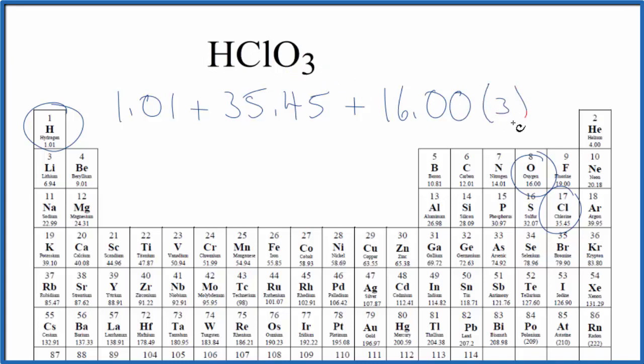So we're going to multiply this times 3 and when we do the math we find that the molar mass for HClO3, this chloric acid, is 84.46 and the units are grams per mole.